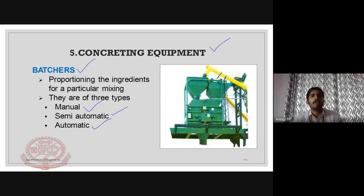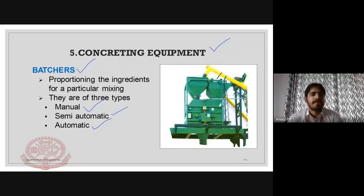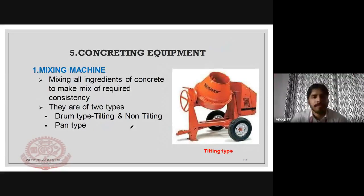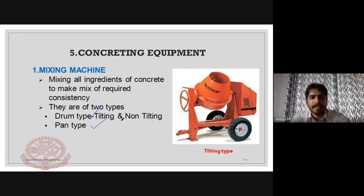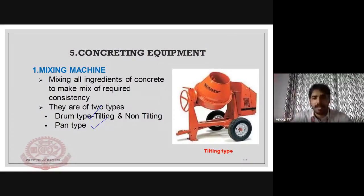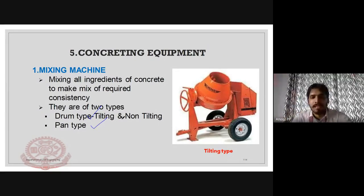Mixing machines are of three categories: drum type and pan type. The drum type can be further divided into tilting and non-tilting. Tilting mixers rotate about an axis and can be tilted to discharge. A concrete mixing machine mixes cement, fine aggregate, coarse aggregate, and water.